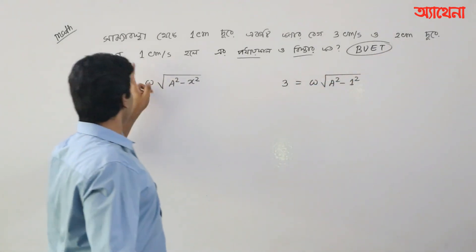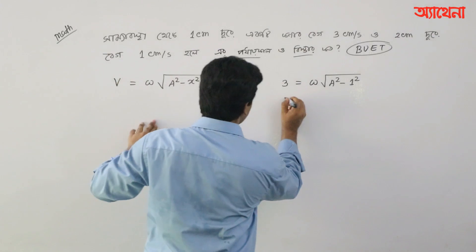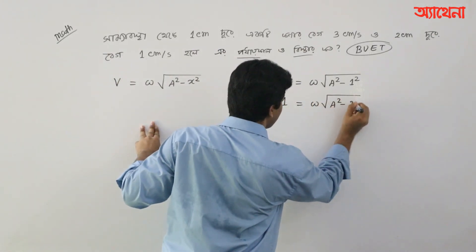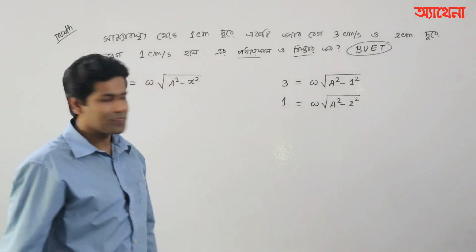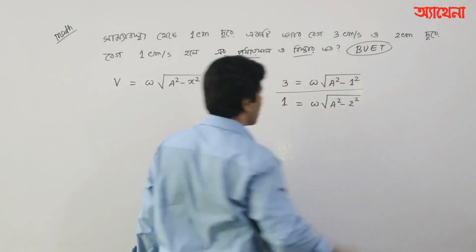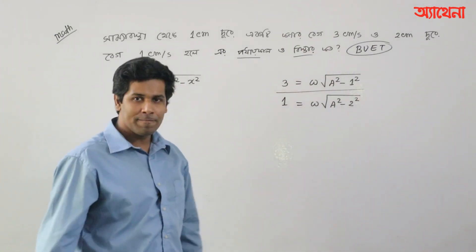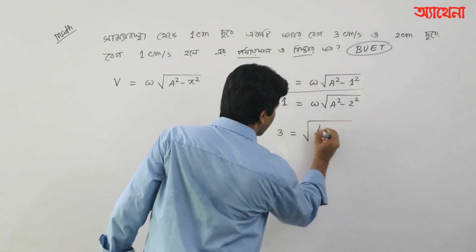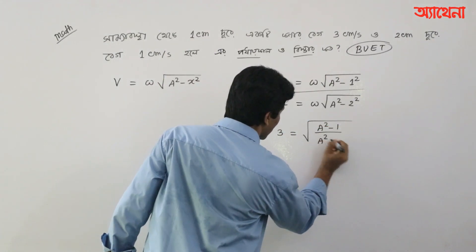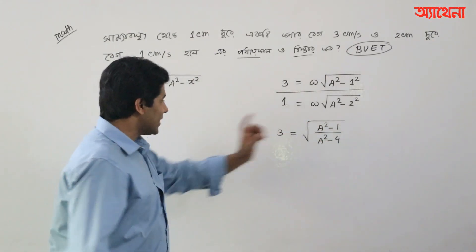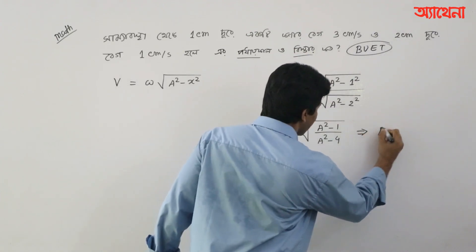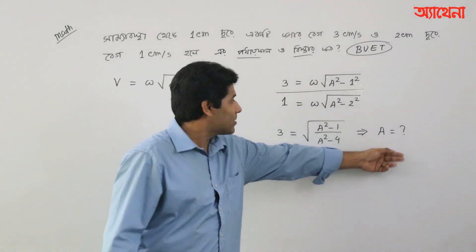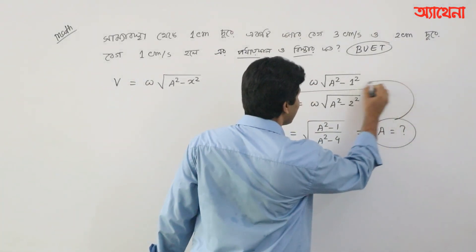This is 2 centimeters, and 1 centimeter per second. So, the velocity is 1 centimeter per second at x equals 2 centimeters. The omega squared equals (a squared minus 1) divided by (a squared minus 4). So, omega root is root of (a squared minus 1) divided by (a squared minus 4).